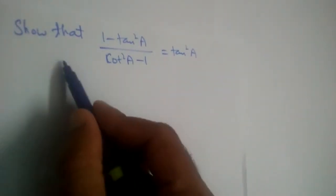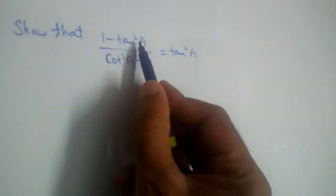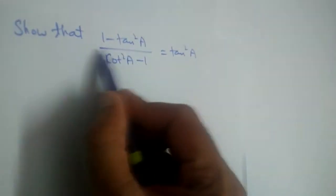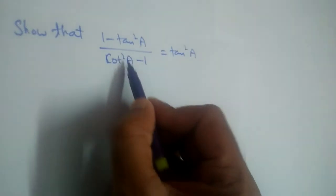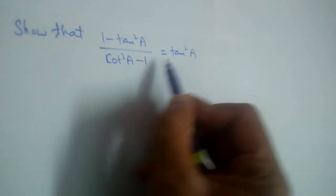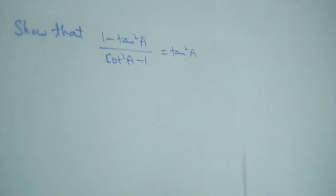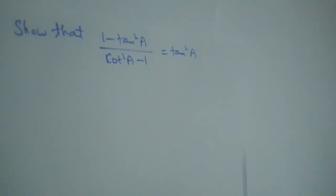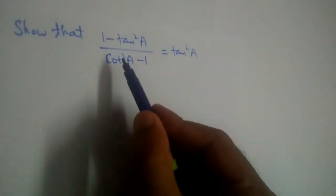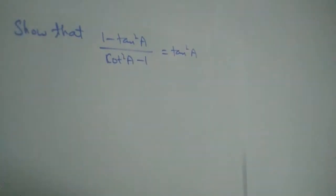We have a problem here: show that (1 minus tan squared a) divided by (cot squared a minus 1) is equal to tan squared a. When we first see this, it looks like we can apply identities here.